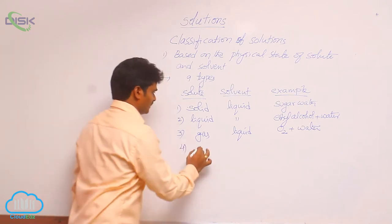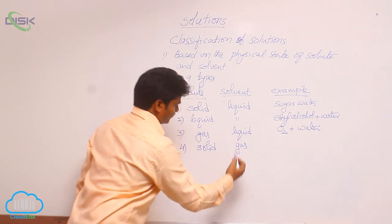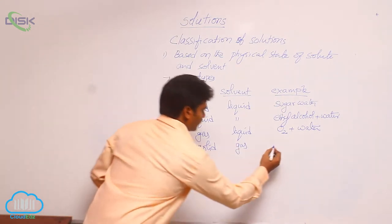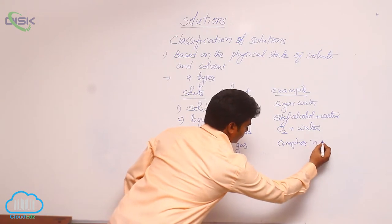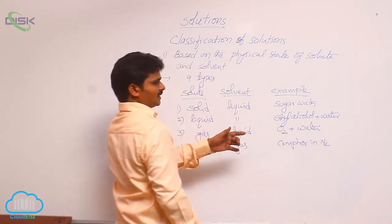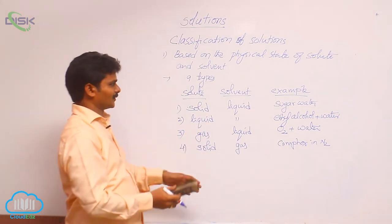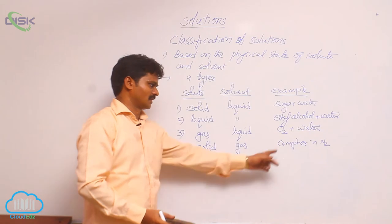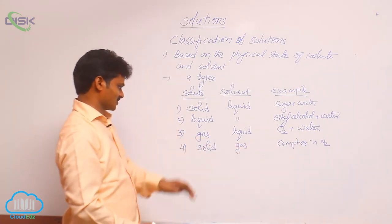Fourth one, solid in gas. For this example, camphor. Camphor in N2 gas. You know, N2 is the major component of air. Here, we are discussing about only binary solutions. That is why camphor in nitrogen is an example for solid in gas type solution.